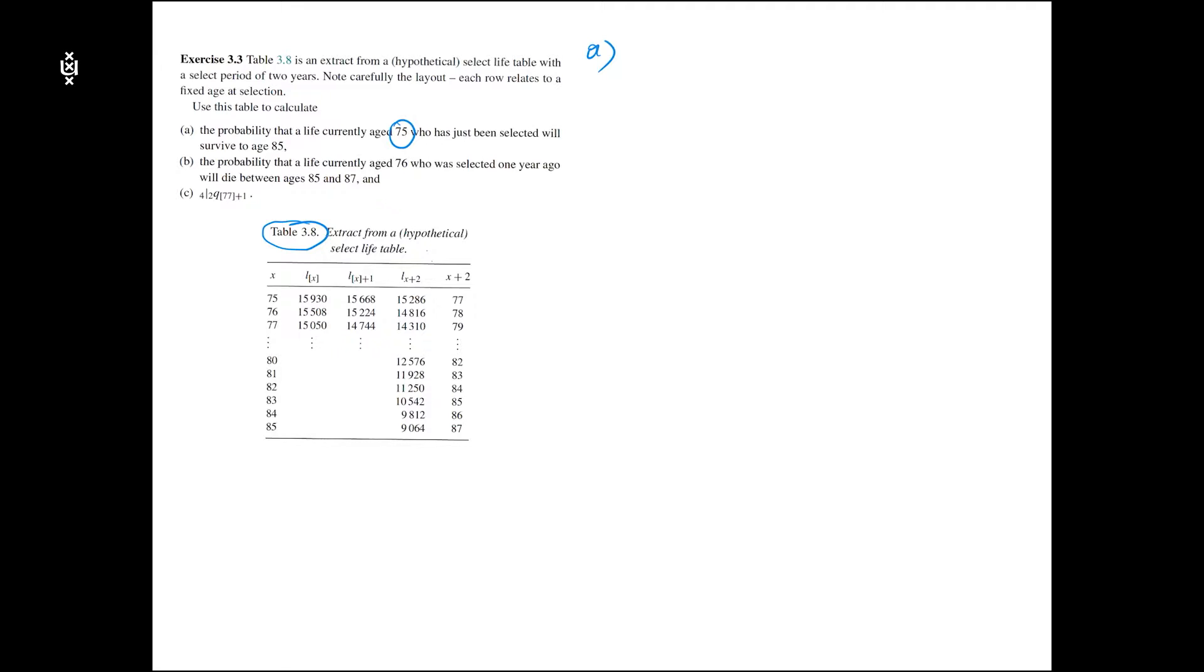This life has to survive until age 85. So in actuarial notation we look for a survival probability, so I put a P here. It's someone aged 75 who was selected at age 75, so I put the 75 between brackets.